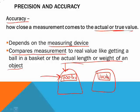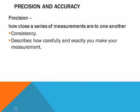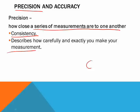And I'll give you an example of that in a second. Now, precision is how close a series of measurements are to one another. That's consistency. It describes how carefully and accurately exactly you make your measurement. If you are measuring your height, you use a ruler that you made. It might be accurate, but it might not be. But if you're measuring the same thing all the time, you're precise.